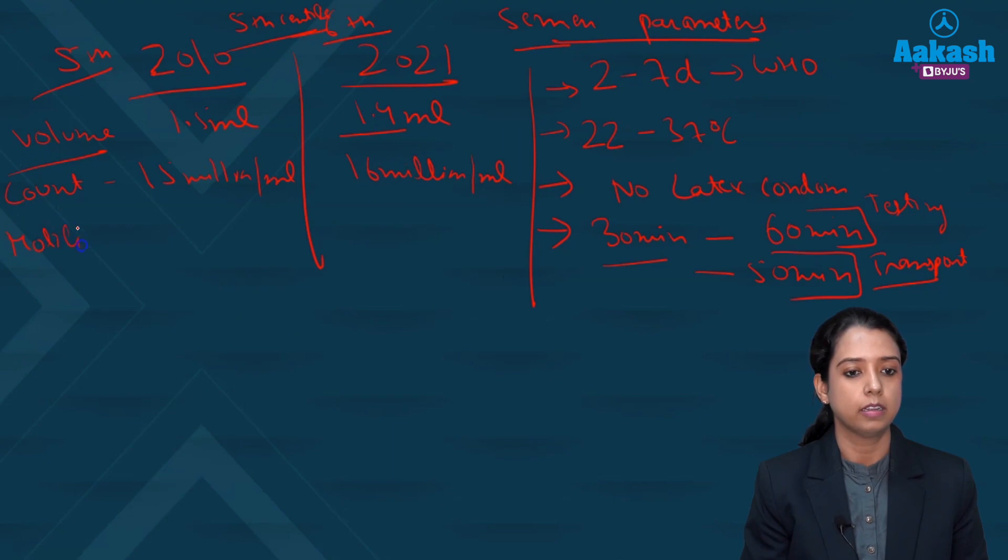Now comes the motility. So total motility should be 40 percent according to the previous guidelines. But now newer one said total motility should be 42 percent. So this is total motility.